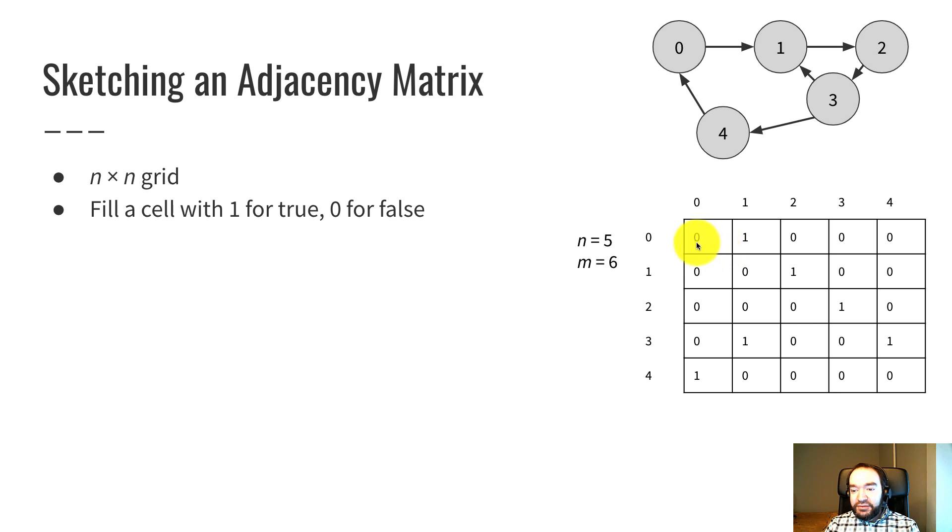It would probably be best to write false and true in here. That would be the most accurate thing because our C++ code will use the boolean type of true and false. But it gets tedious and cluttered to write out the word true and false everywhere in these big grids. So instead we use one for true, zero for false. That's a pretty common convention.